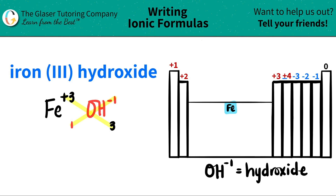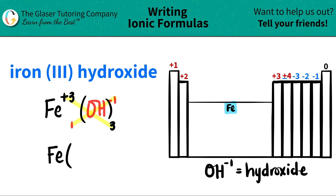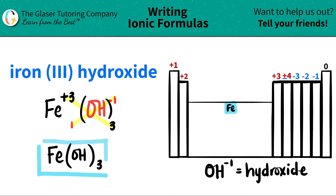Now I'm ready to write my formula. I got iron — I only need one of them, so I don't have to write the one. But here's the thing: if I have multiple polyatomics, which is what I have here — I have three hydroxides — I need to put that hydroxide in parentheses. So in this case, I'm going to put parentheses OH, close the parentheses, and now I can say I have three hydroxides. So iron 3 hydroxide is Fe(OH)3.